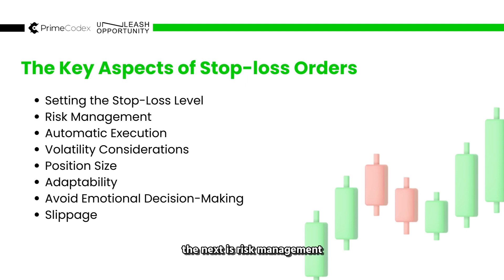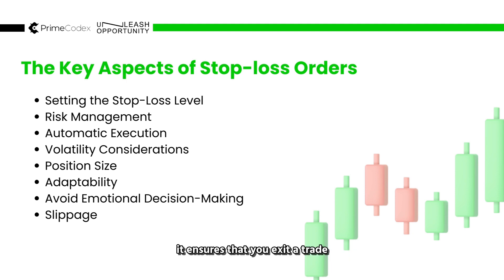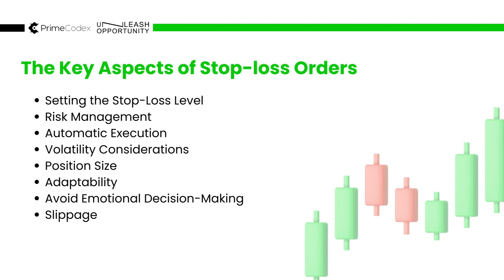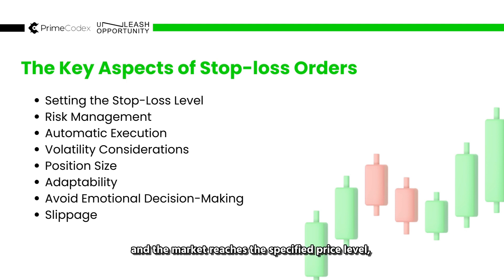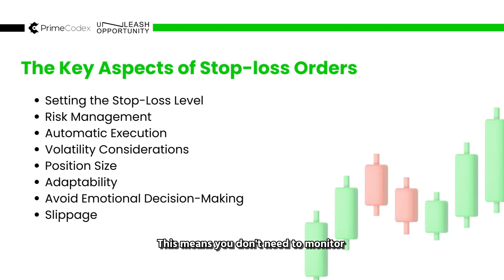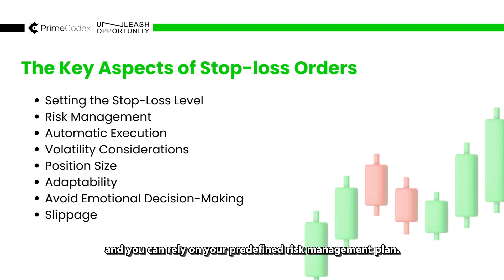The next is risk management. The primary purpose of stop loss is to manage risk. It ensures that you exit a trade if the market moves against you, preventing larger losses than you are willing to accept. Traders often define their risk tolerance before entering a trade and use stop loss orders to reinforce it. The next is automatic execution — once your stop loss order is set and the market reaches the specified price level, the order is executed automatically by your broker. This means you don't need to monitor the market constantly and can rely on your predefined risk management plan.